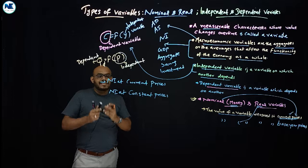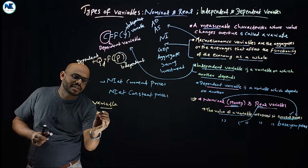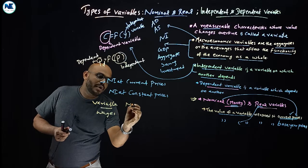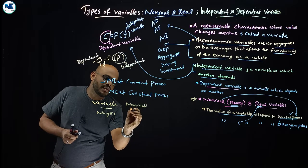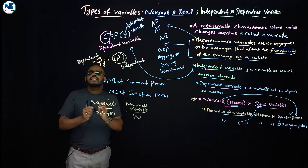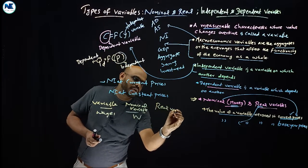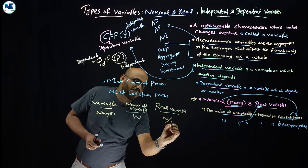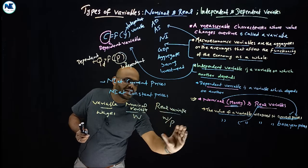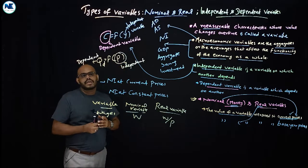National income at constant prices is calculated on the basis of base-year prices — that is real national income. Another example: take wages. The nominal variable here is the existing wage W. To get the real variable, you divide W by the price level P — that gives you the real wage. Here, inflation is adjusted out, so the real variable is the real wage, while the nominal variable is the nominal wage.